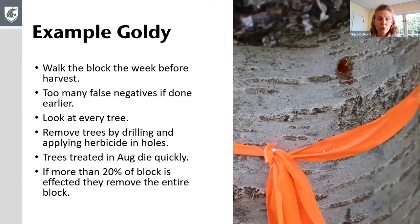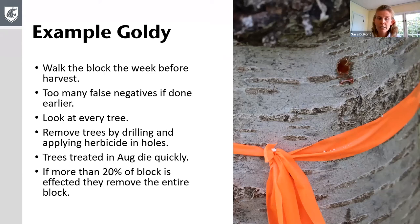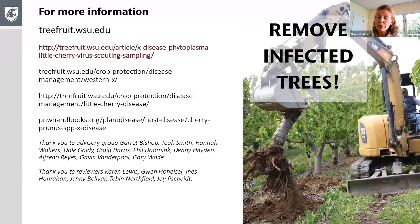Dale Goldie's scouts walk their blocks. One thing he emphasized is that the week before harvest is the critical time — when tried earlier, they feel they've gotten too many false negatives. They look at every tree and use the drilling and herbicide injection method, finding that when applied in August, the trees die quickly and herbicide injury shows in adjoining trees. A number of resources are now up on the website: a new sampling and scouting trifold flyer in English and Spanish, a 25-page booklet with more pictures of symptoms, and updated main pages.